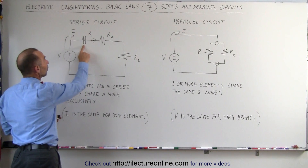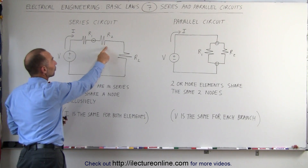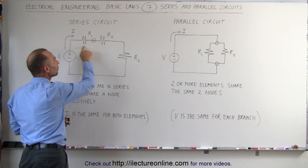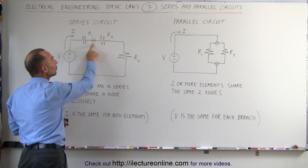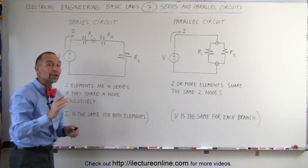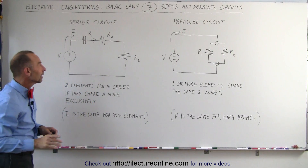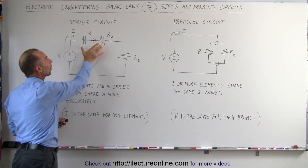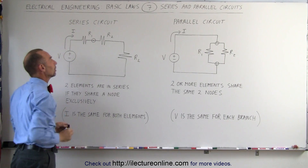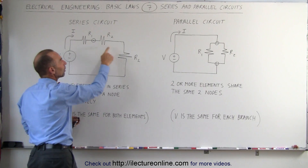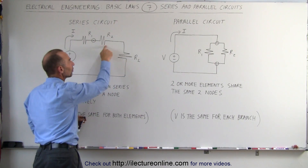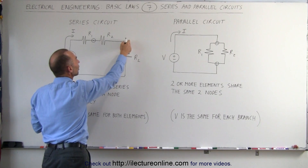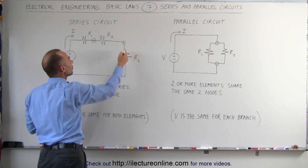Take resistor R1 and resistor R2 — in between there's a node. They both share that node, and that node is not shared by any other element inside the circuit. Therefore R1 and R2 are in series with one another. R2 and R3 are also in series with one another because they share a node which is not shared by any other element.